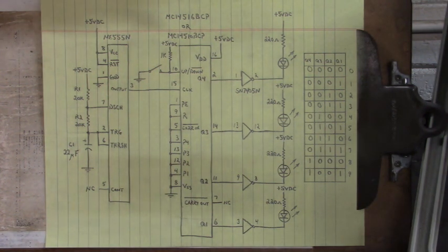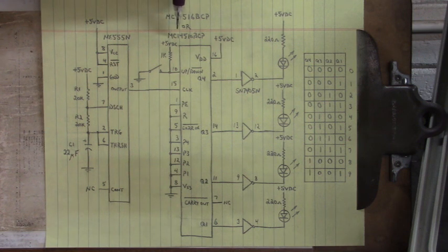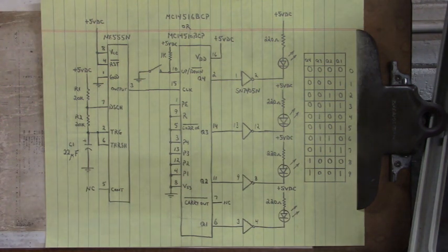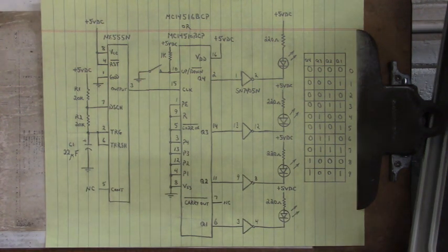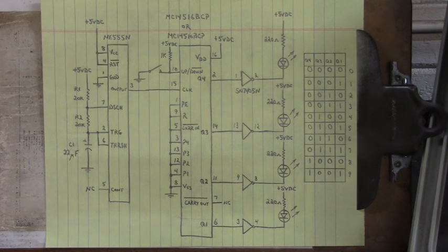It's centered around this IC MC14516BCP or the MC14510BCP. The pinouts are identical for each IC. The differences are that the 4516 is a presettable binary up-down counter and the 4510 is a presettable binary coded decimal up-down counter.